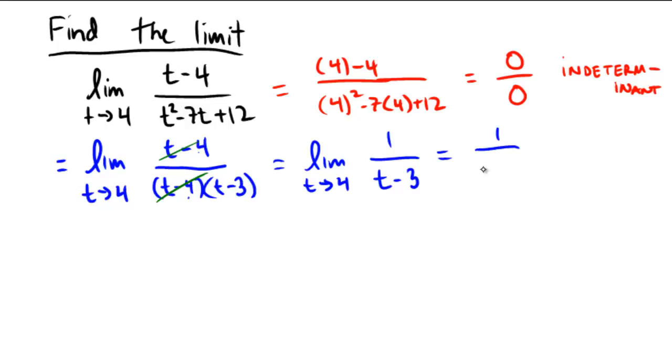So now we have 1 over 4 minus 3, which is 1 over, now 4 minus 3 is just 1, so we have 1 over 1. And of course that simplifies to be 1.